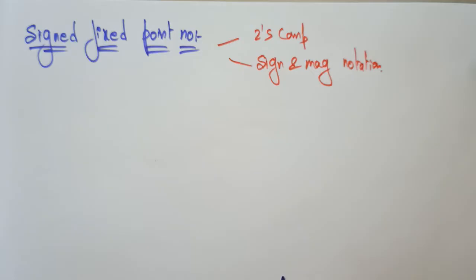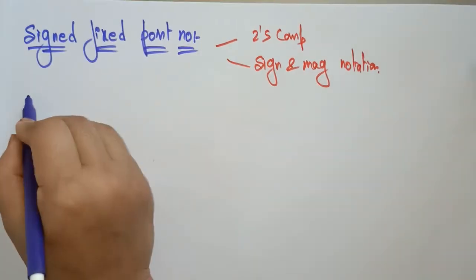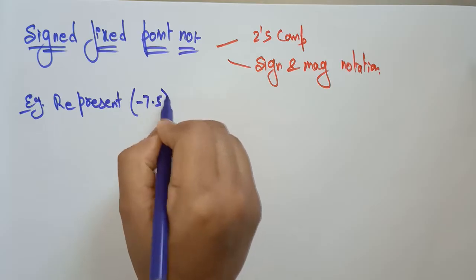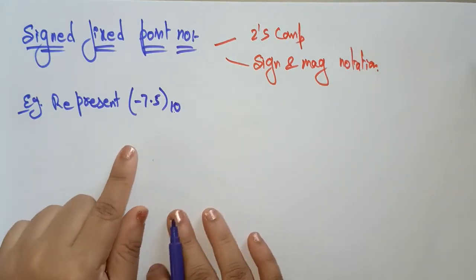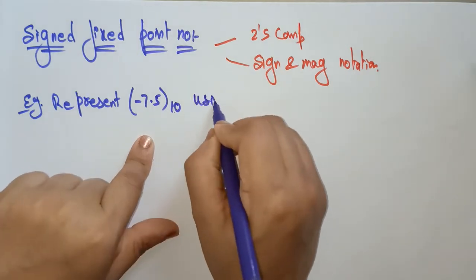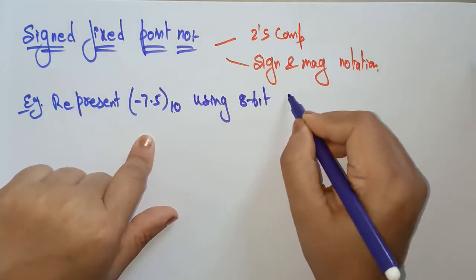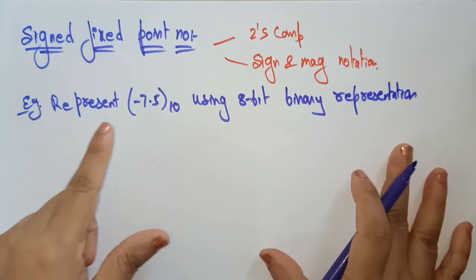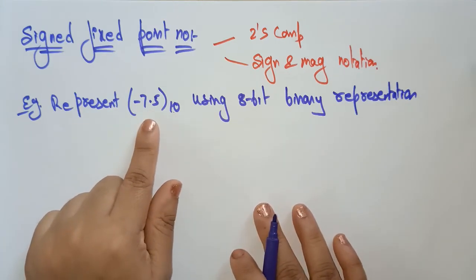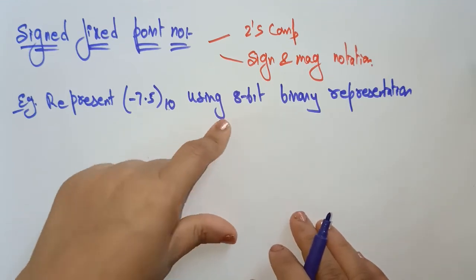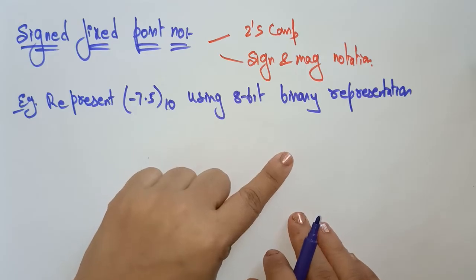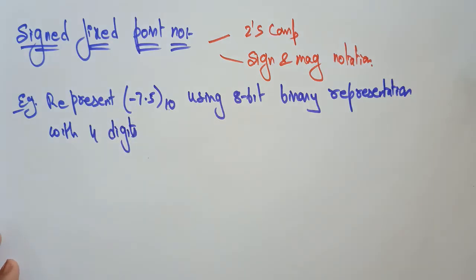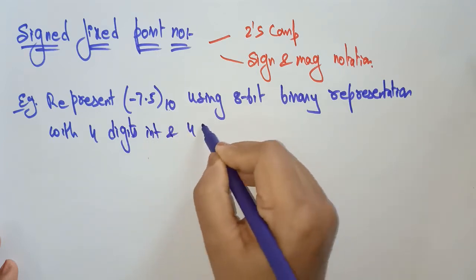Let me take a simple example. They are giving us: represent minus 7.5 (base 10) — a negative decimal fraction — using 8-bit binary representation. We have to convert this signed fixed-point decimal number into an 8-bit binary representation, with 4 digits as integer bits and 4 bits as fraction bits.